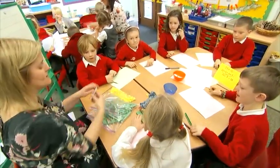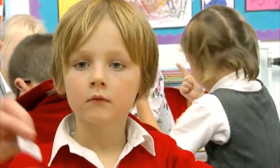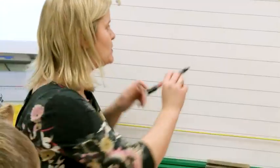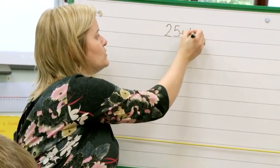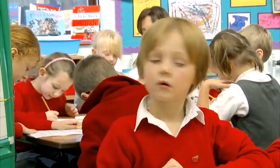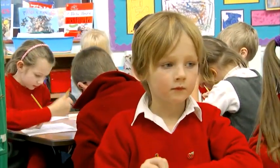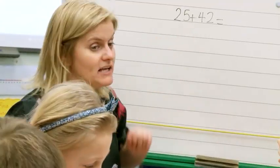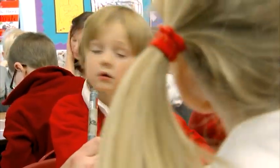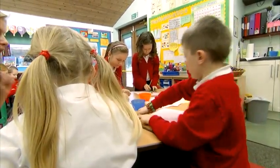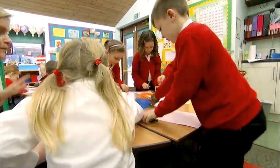So we're going to do the first one together. I have got 25 add 42. I want you to get the counting equipment to make 25 add 42. We're looking at partitioning into 10s and 1s, adding the 10s digits and then the 1s digits together to make them easier to add.